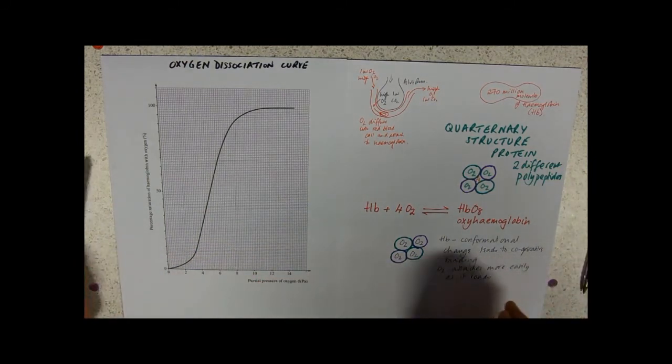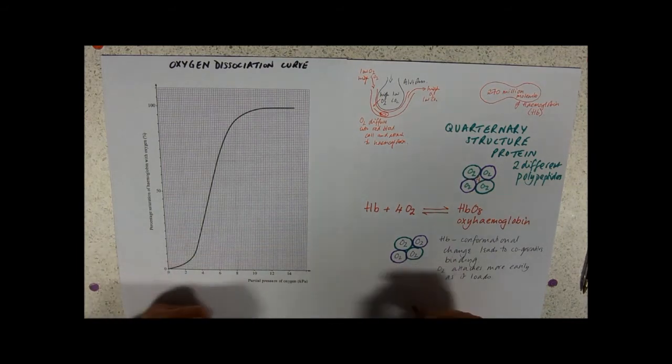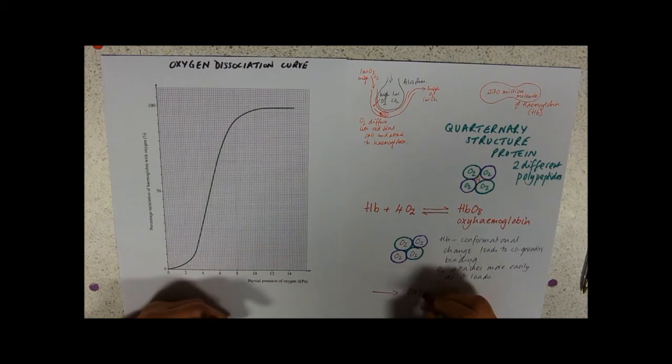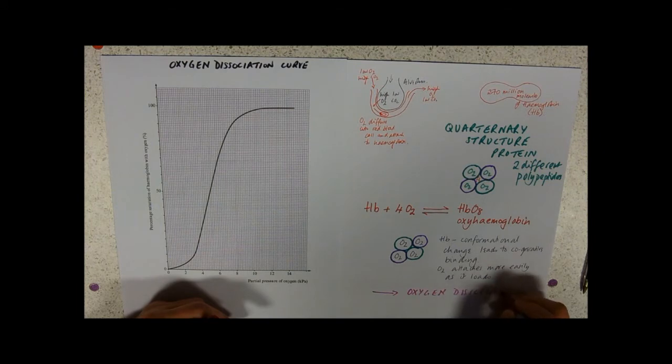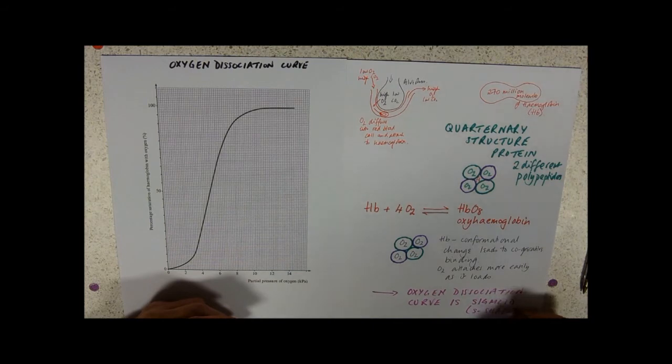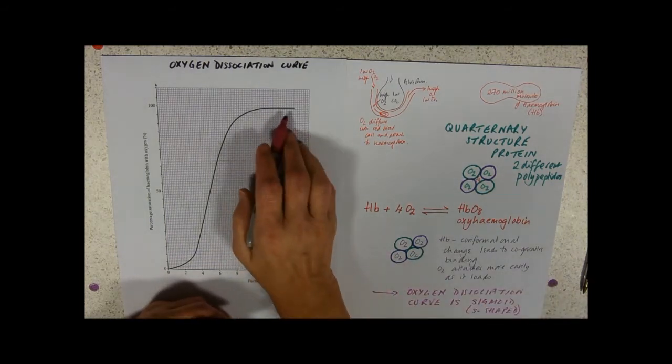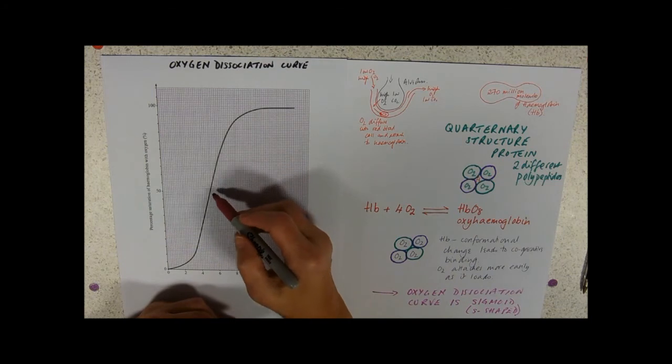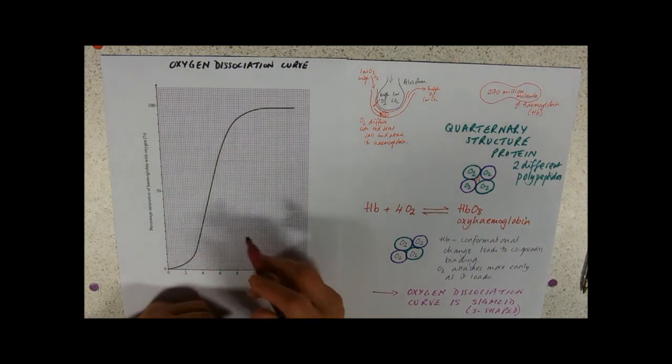The result of that is that the oxygen dissociation curve is sigmoid. What sigmoid means is S-shaped. It's very flat at the top, it's got this steeper bit in the middle, and then it curves away to zero.